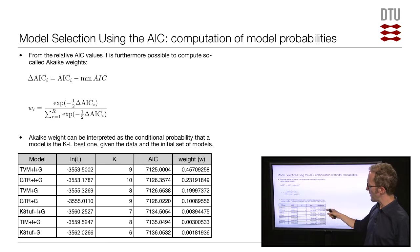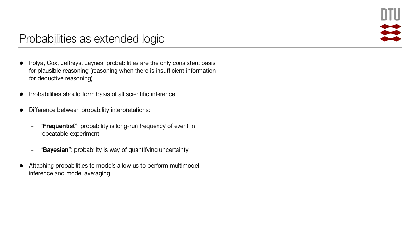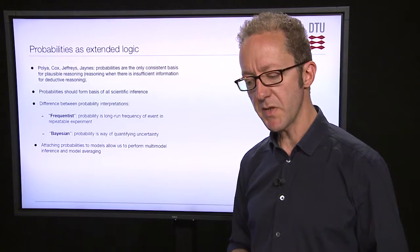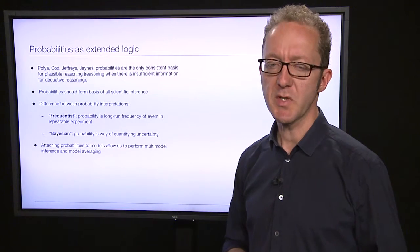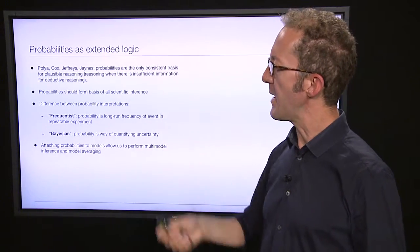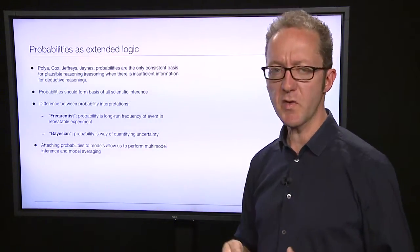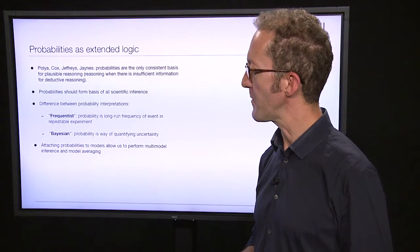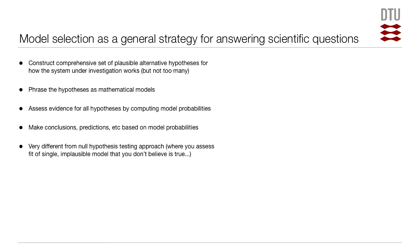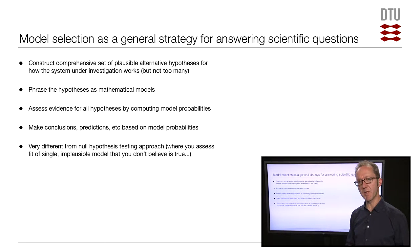Given the models we've looked at, there's a 45% chance that the top model is the best. This way of using probabilities as a way of quantifying uncertainty is very much like Bayesian inference — probabilities used to quantify uncertainty are believed by many to be the only consistent way of reasoning in the face of uncertainty. This way of comparing models using the Akaike Information Criterion and quantifying them with probabilities can be used in a general strategy for answering scientific questions.